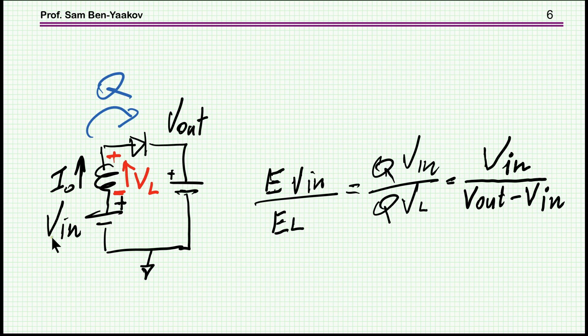So the energy is charge times voltage. So the energy coming off here is Q times V_in. Now, during this process, the voltage across the inductor is constant. It is the difference between V_out and V_in. I am neglecting the voltage across the diode. So therefore, it's also Q times V_in is the energy coming off the inductor. And therefore, this ratio is this thing.